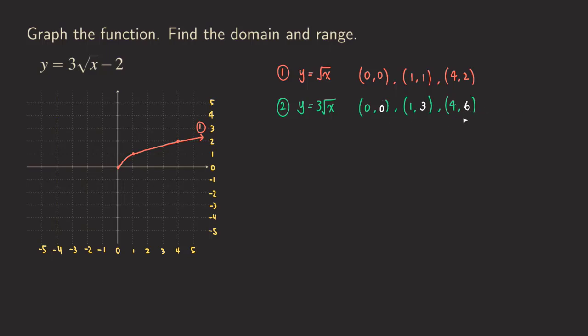So now we have those new key points and we can actually graph that. We have zero zero and then this one is one three so at x equals one this has a y value of one but we are going to triple it. So one two three so we have this point here.